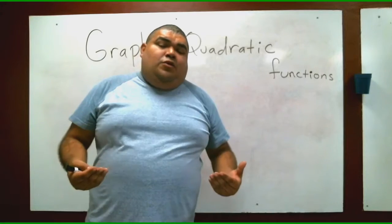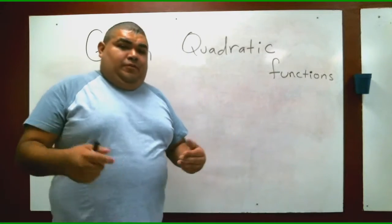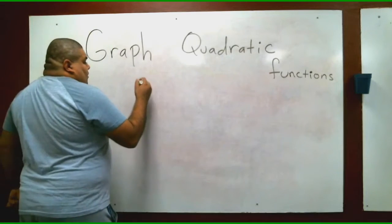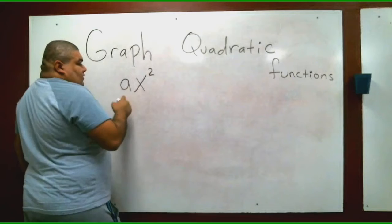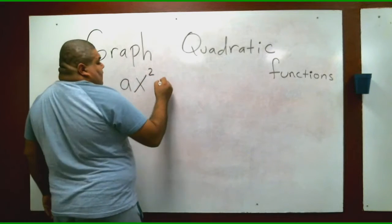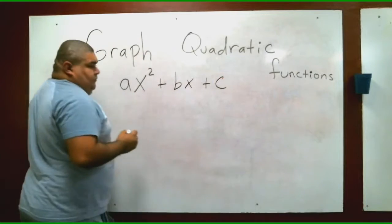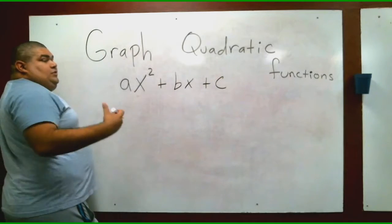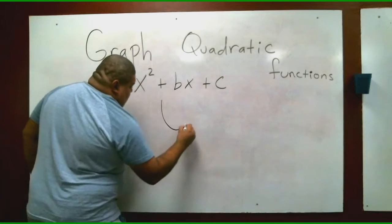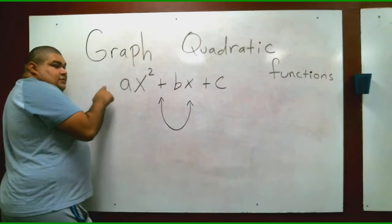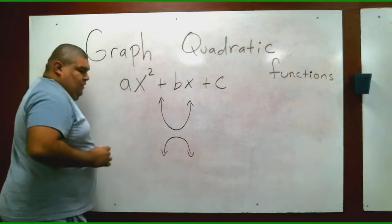Quadratic functions usually when you graph them are a U, because of the x and the square. So you have a number, usually the equation is ax² + bx + c. The reason why it's called quadratics is because of the square here makes usually a U graph. If this is negative, it's usually going down.